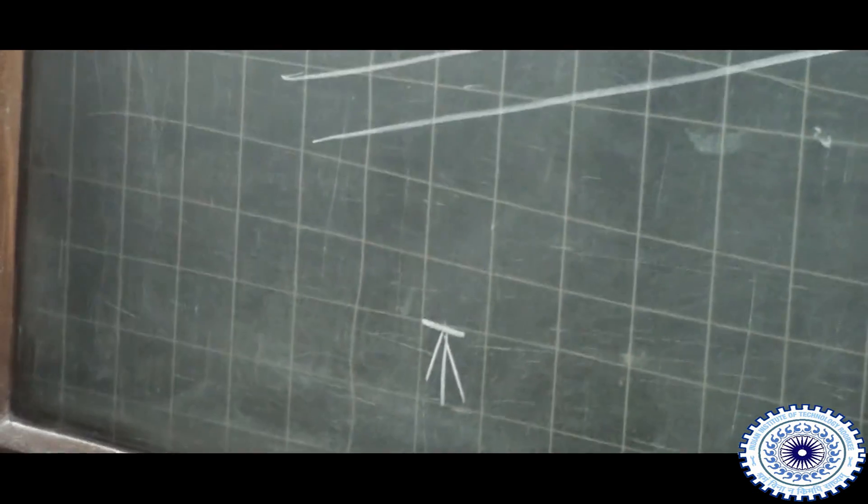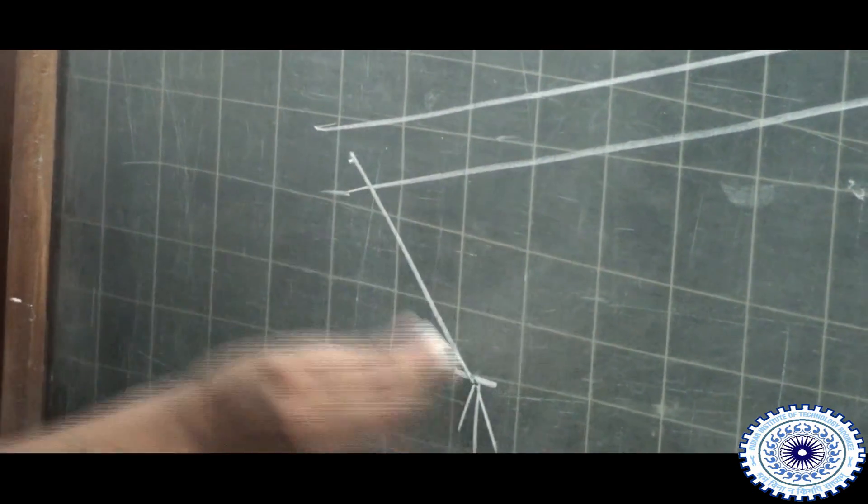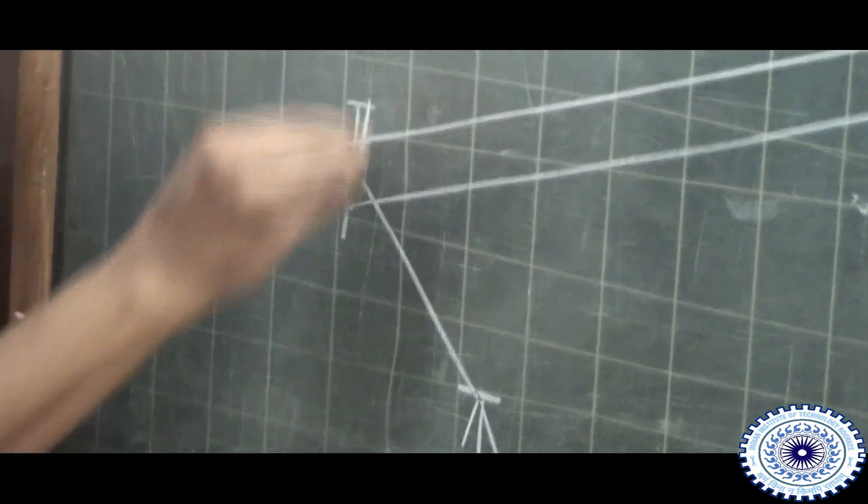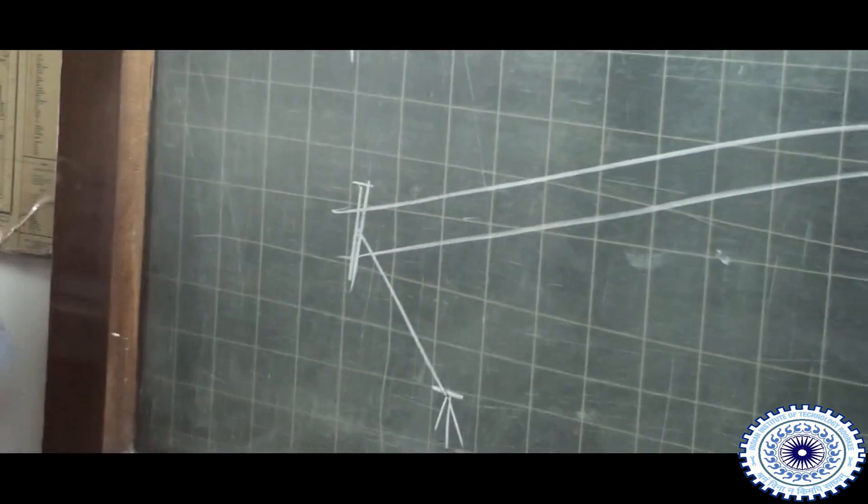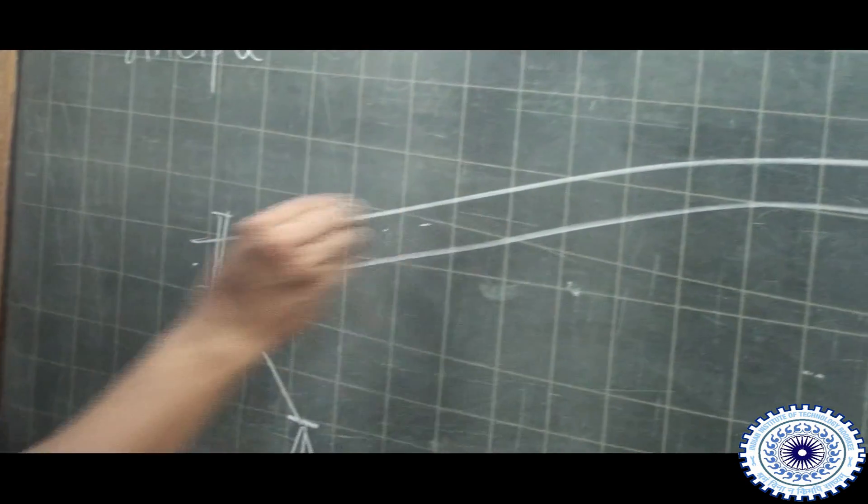What we will do? We will put our auto level equipment here, and then find out the level by sighting the different points. We will keep our staff over here and then find out the level here. And then along the length of the road,